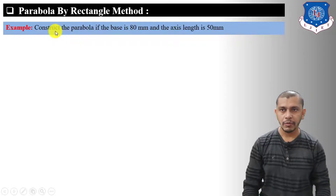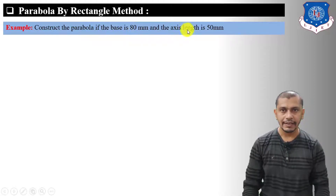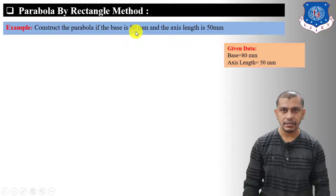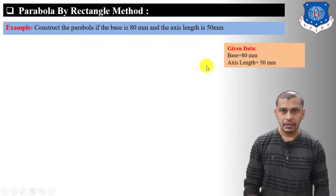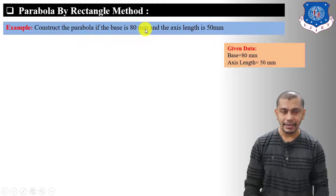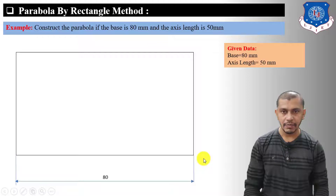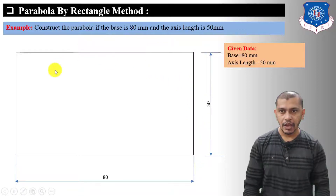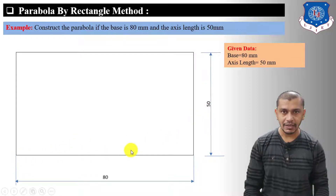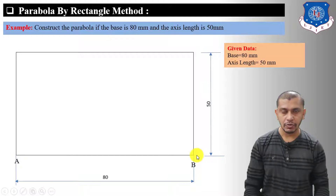Let's move on to the rectangle method to construct the parabola. The problem states: construct the parabola if base is 80 mm and axis length is 50 mm. First of all, we have to draw a rectangle having length 80 mm and width 50 mm. After drawing the rectangle, we show the base AB and the axis of the parabola.